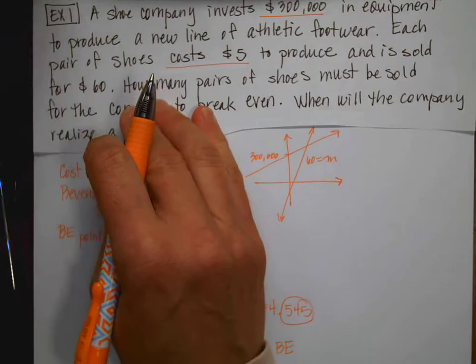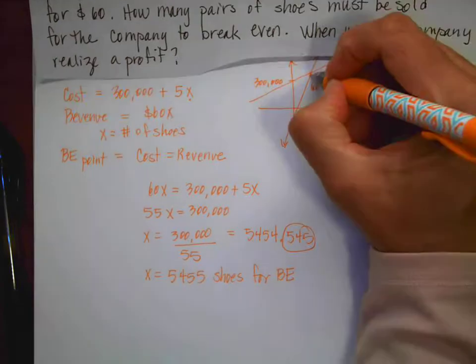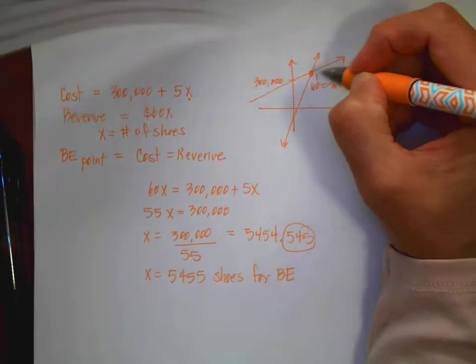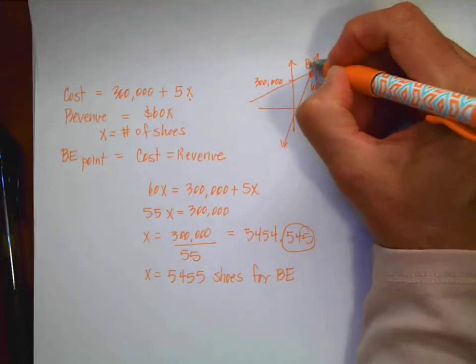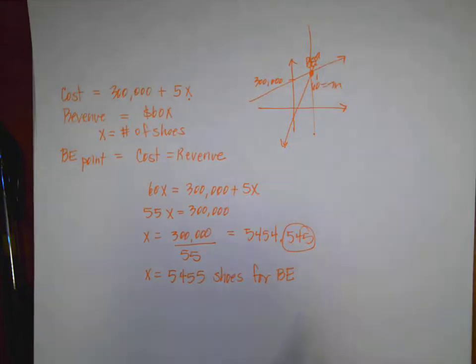Okay, so my costs and my revenue are going to be equal at that point. The second question says, when will the company realize a profit? So remember, if this is my break even point, I'm going to realize the profit after that. So the profit is going to occur when I sell more than 5455 shoes.